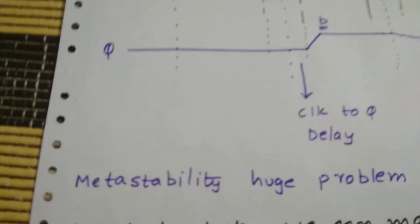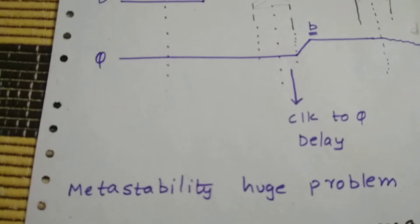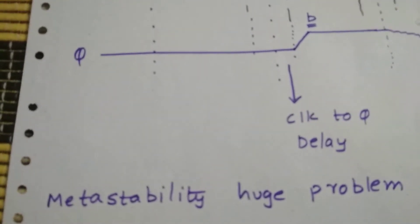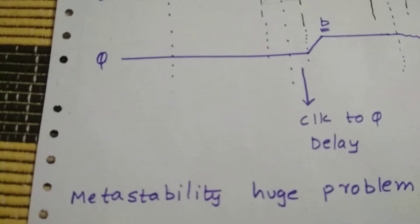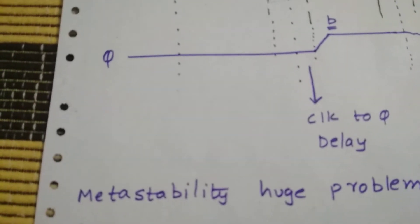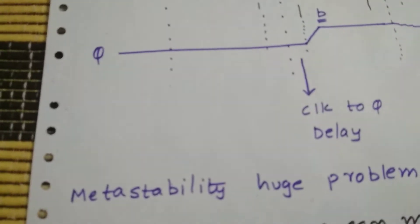It might be a huge problem while using state machines, where we want to go to one state, but because of the undesired metastability result, we go to another state. So how can we avoid this?